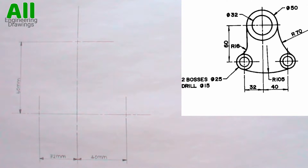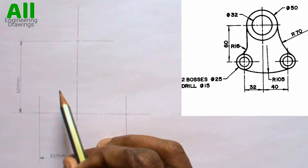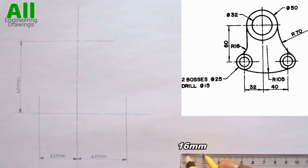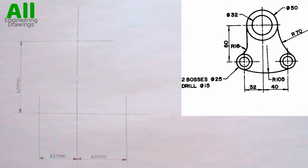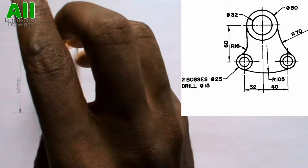After drawing the layout, it is time to draw circles on specific points on the drawing. From the question, there is a circle here of diameter 32mm, which means the radius is 16mm. So I will adjust my compass to a radius of 16mm. Then I will place my compass on this point and produce the circle.